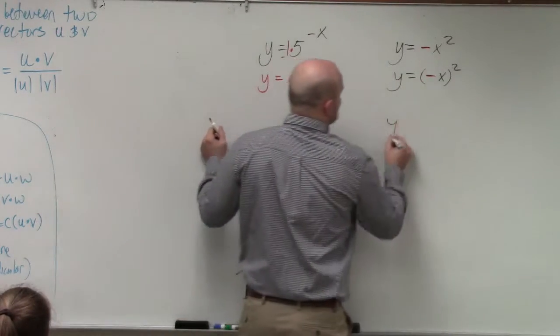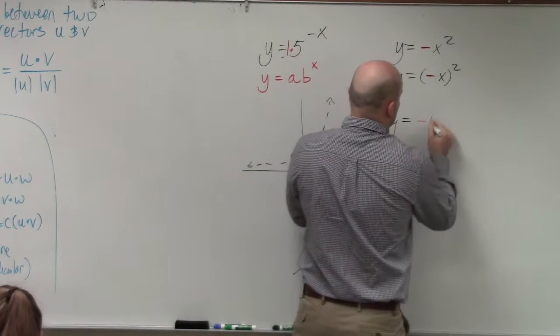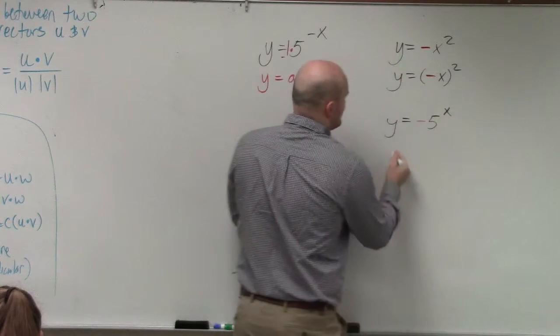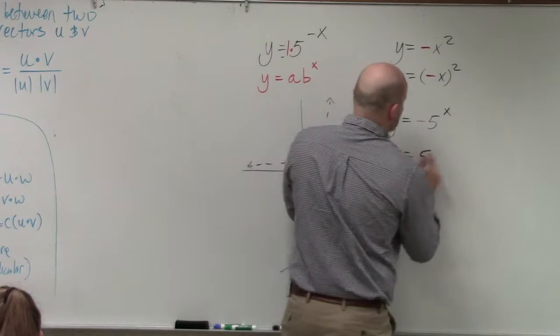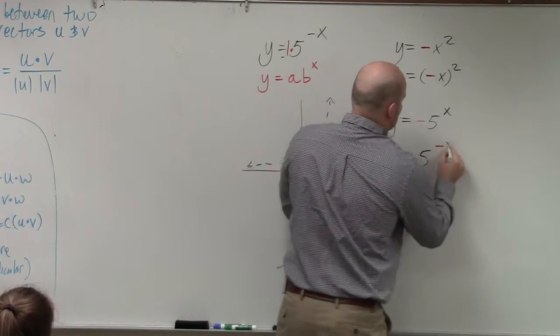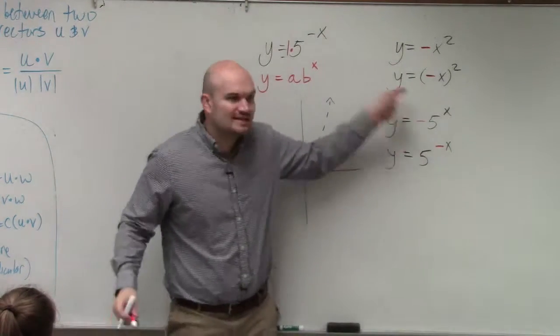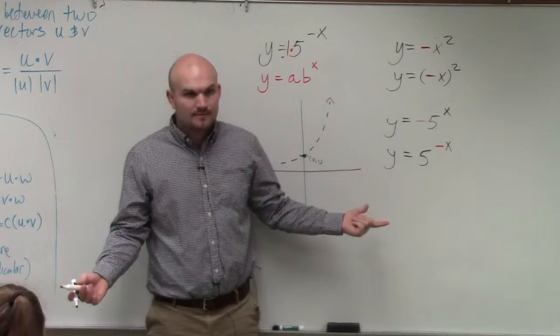Well, to write this as a negative outside, it would look like this. To write it as a multiplying by a negative inside, it looks like that. Do you guys see the difference of where the negatives are placed? Right?